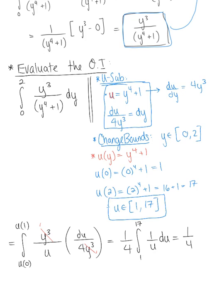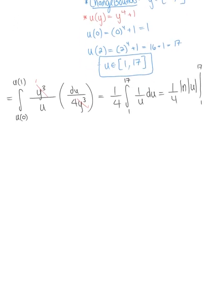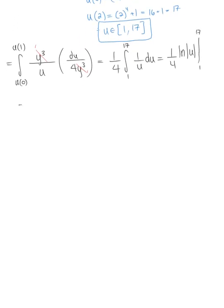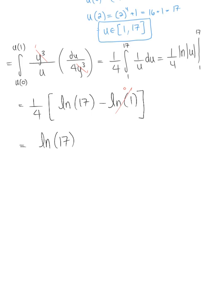This integrates to one-fourth times the natural logarithm of the absolute value of u, evaluated from 1 to 17. Plugging in the values gives one-fourth times the natural logarithm of 17 minus the natural logarithm of 1. Since the natural log of 1 equals 0, our final answer is the natural log of 17 over 4.